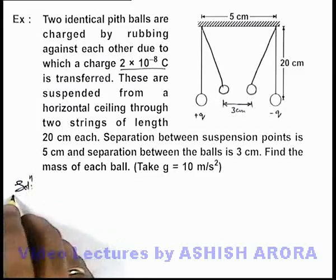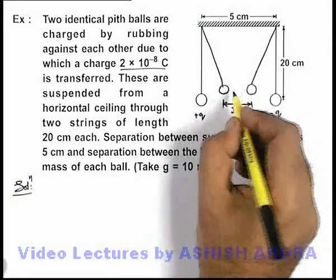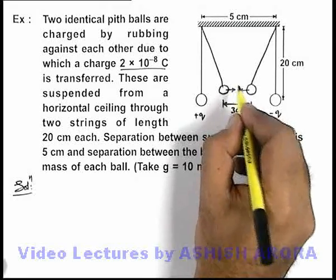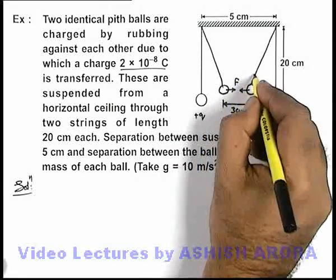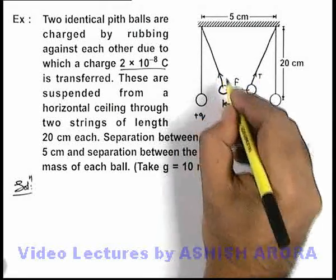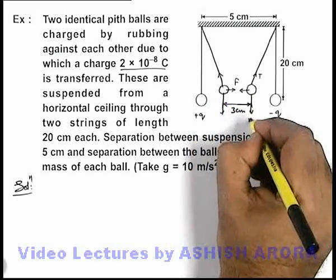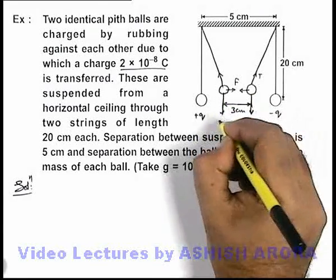In the solution, when these are attracted because of the coulombian force F, the string will have a tension T and both balls will experience gravitational force mg in the downward direction.